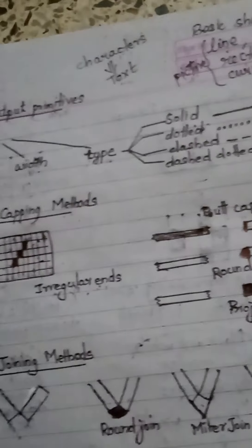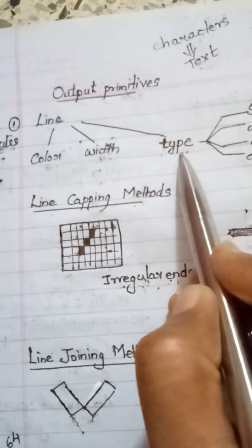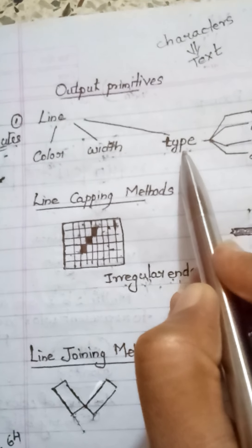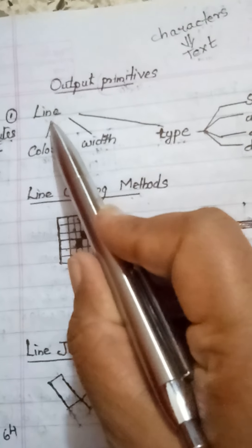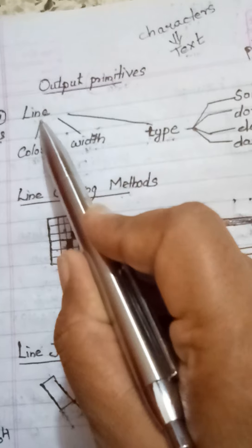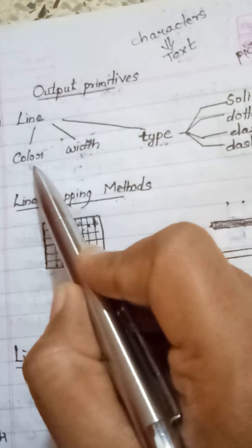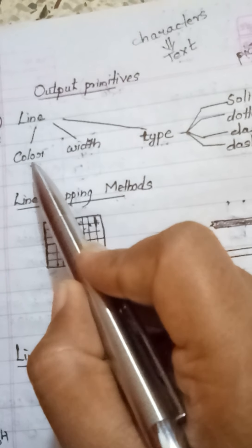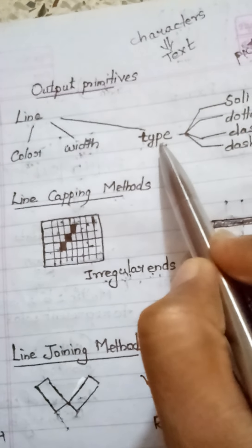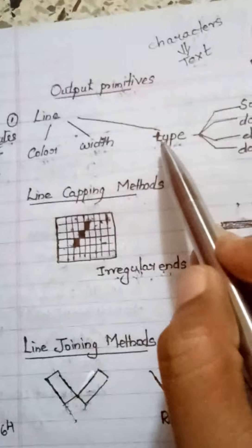Every line has these three attributes. Attributes are the properties used to describe an object. A line has three different attributes: color, width, and type. This is all about the attributes of line.